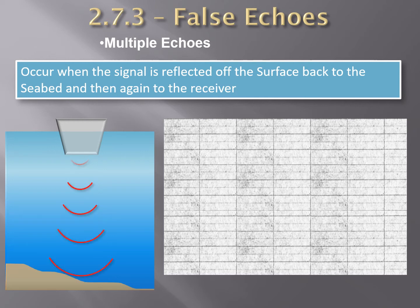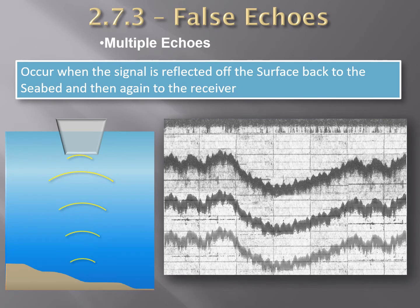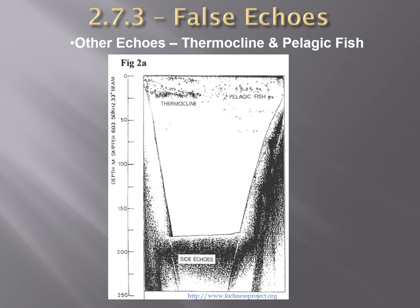Multiple echoes occur when the transmission pulse in depths of several hundred meters is reflected not once but several times between the seabed and the surface or ship's bottom before its energy is dissipated, causing multiple echoes to be recorded on the trace. These can be faded out by reducing the sensitivity of the set. Multiple echoes are too obvious to cause confusion in first phase settings, but should be guarded against in second or subsequent phase settings. The sounder should always be switched on in the first phase and then phased deeper to find the first echo.